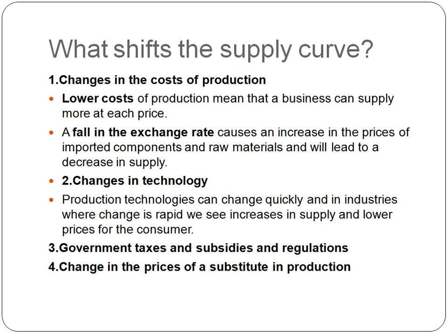Changes in technology — this one is really interesting, I'll get to that in a moment. Government taxes, subsidies, and regulations: if the government increases your taxes — usually corporation tax, currently at 20% placed on profits — and if there's an increase in taxation, say 50%, they're taking 50% of your profits. You're probably going to supply less because you don't have as much income. Changes in the price of substitutes in production — I've discussed this in a previous video.